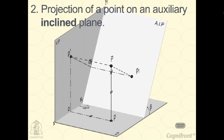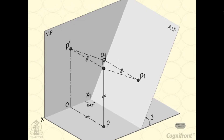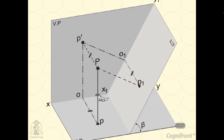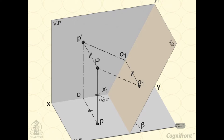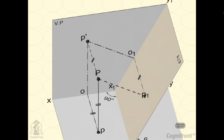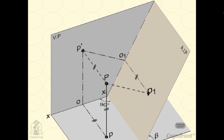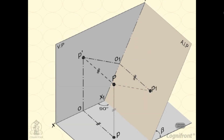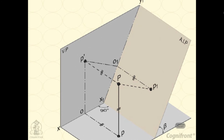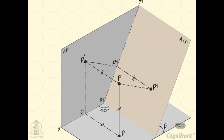Projection of a point on an auxiliary inclined plane. A point P is situated above the HP and in front of the VP. AIP is an auxiliary inclined plane making an angle beta with the HP. It meets the VP at right angles in a line X1, Y1. P dash and P are respectively the front view and the top view of point P. P1 is the auxiliary top view obtained by drawing the projector P, P1 perpendicular to the AIP. P1 O1, the distance of the auxiliary top view P1 from X1, Y1, is equal to PO — the distance of the top view P from XY — which equals the distance of point P from the VP.